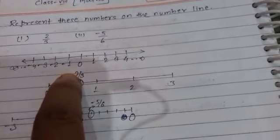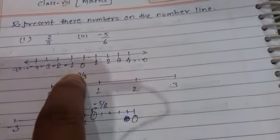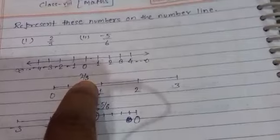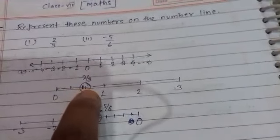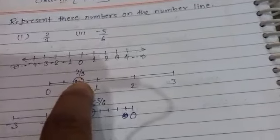Now I am going to represent 2/3. It means second part in the section of thirds. The first part is here and second part is there. So here 2/3 lies.